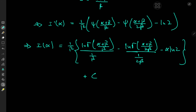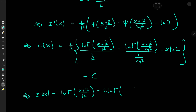There is some cancellation: the 1 over beta terms cancel out, so I of alpha takes the slightly more elegant form: log gamma of alpha plus beta over beta, minus 2 times log gamma of alpha plus beta over 2 beta, which by log properties we can write as log gamma squared of alpha plus beta over 2 beta, minus alpha over beta times log 2.